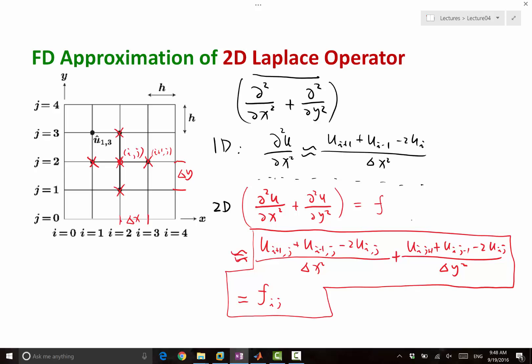How many unknowns do we have? If we know the boundary conditions, u of i, j equal to 0, if i is equal to 0, or i is equal to nx, or j is equal to 0, or j is equal to ny. So if we have this boundary condition, the simplest type of boundary condition, how many unknowns do we have? nx minus 1 times ny minus 1. Exactly.